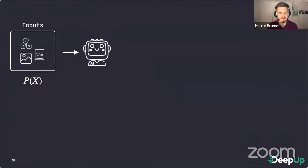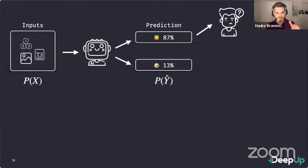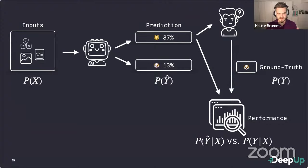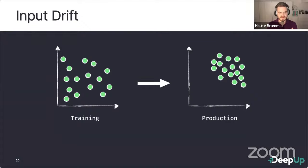The world outside our ML system is always changing, and so does the data our model receives — that is called drift. Looking at an ML model schematically: we have inputs with distribution p(x), the model makes a prediction p(ŷ), and through feedback channels users return the correct label — the ground truth, distribution p(y). Input drift is where the distribution of input data changes from what the model saw in training, due to changes in user demographics or other external factors — these typically occur gradually.